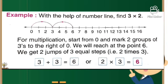We will reach at the point six. We get two jumps of three equal steps. That is two times three. Here you can see that we have started from zero and we have moved to three. And from there, we have again taken one more step and we have reached to six. So 3 + 3 = 6 or 2 × 3 = 6.